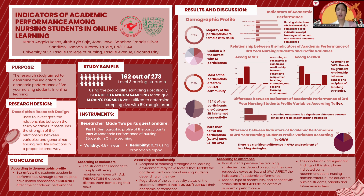As for our study sample, we selected 162 out of 273 level 3 nursing students from a local university in Bacolod City enrolled in the second semester of academic year 2021 to 2022. This was calculated using Sloven's formula with a 5% margin of error. We then utilized probability sampling, specifically stratified random sampling technique, which according to Bradshaw 2019, is a sampling technique wherein the population is divided into subgroups or strata.